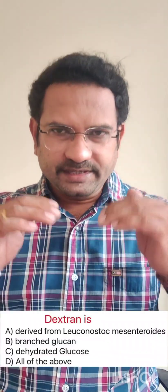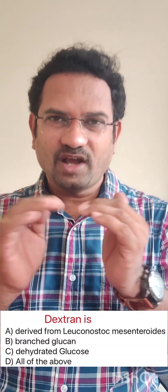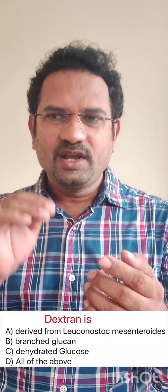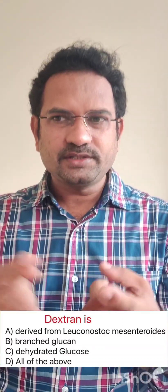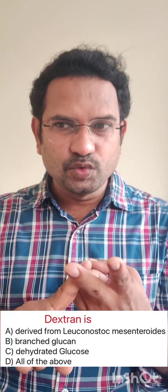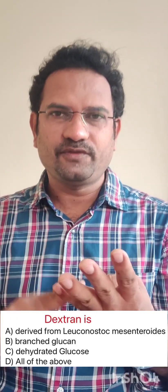Understand the pathophysiological sequence. The last question: what is dextran? Options given are: derived from Leuconostoc mesenteroides, branched glucan, dehydrated glucose, or all of the above.